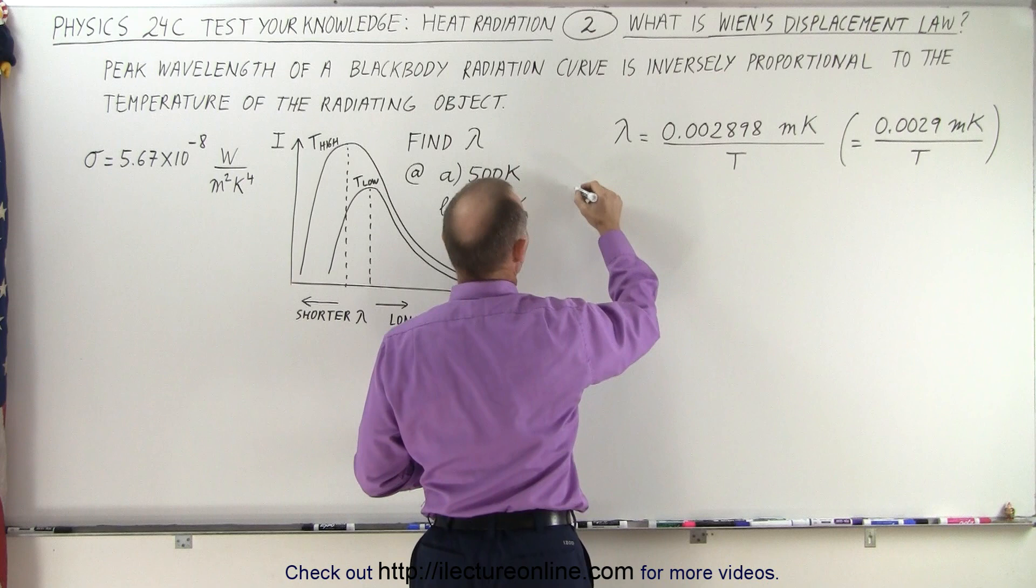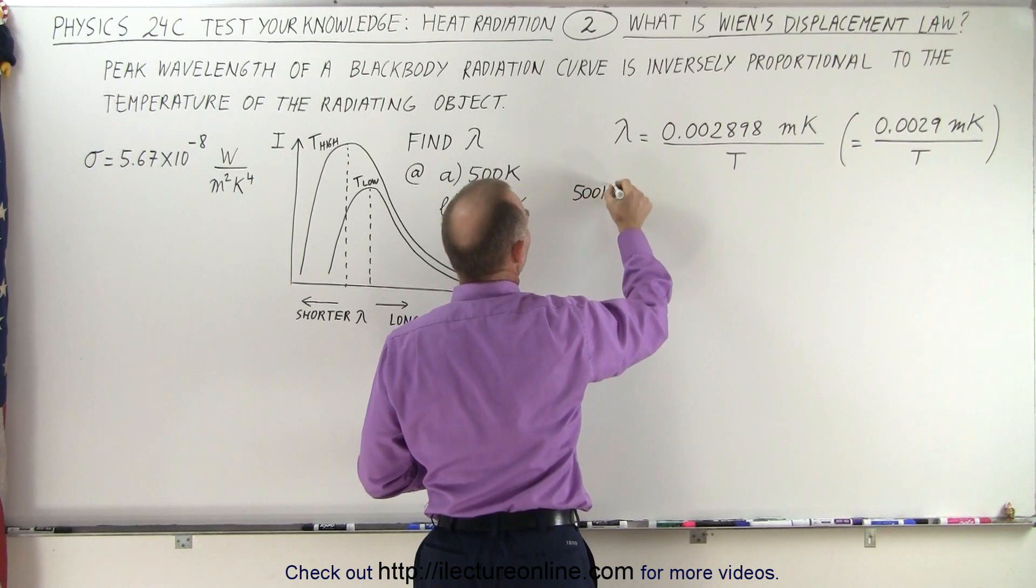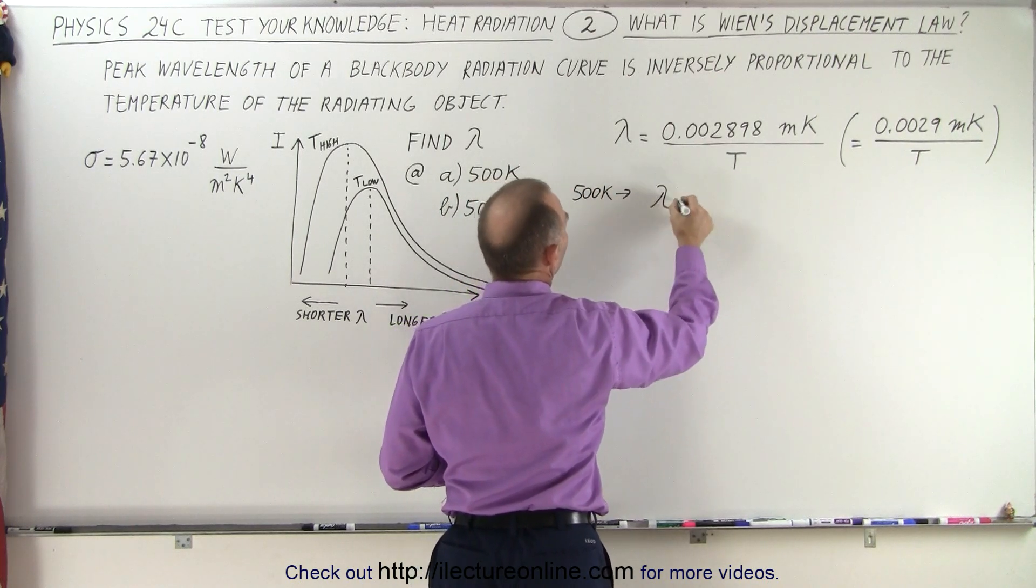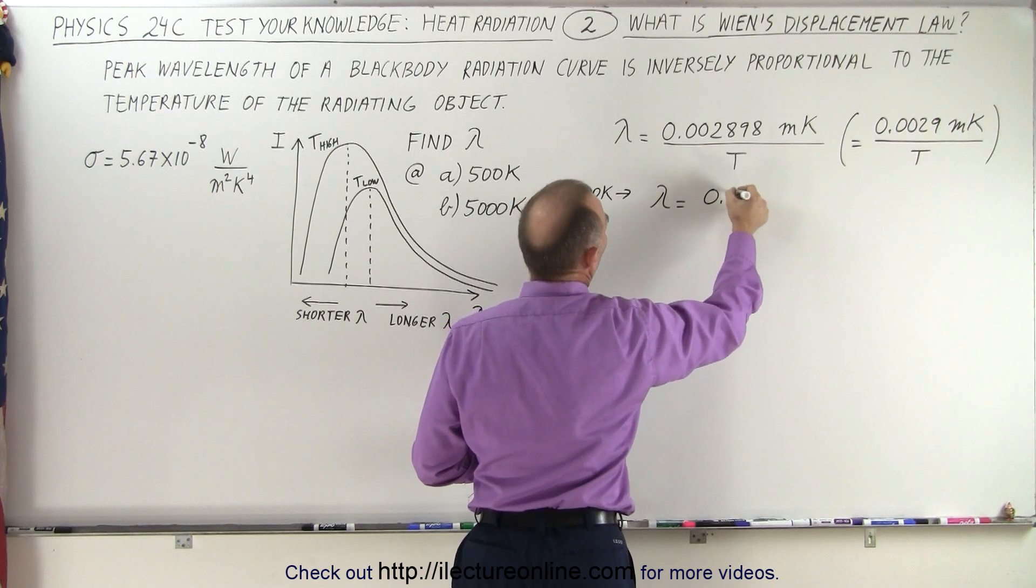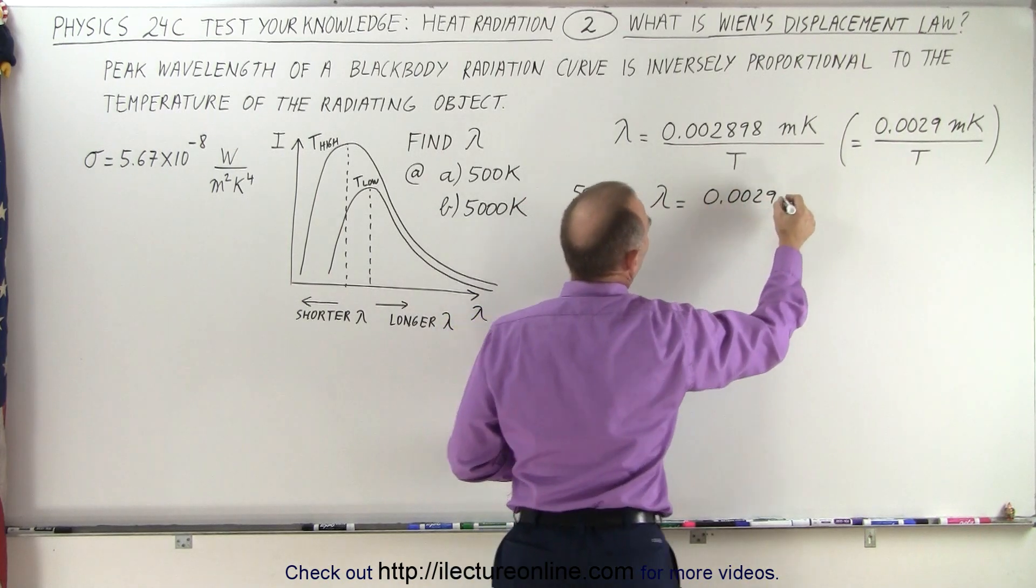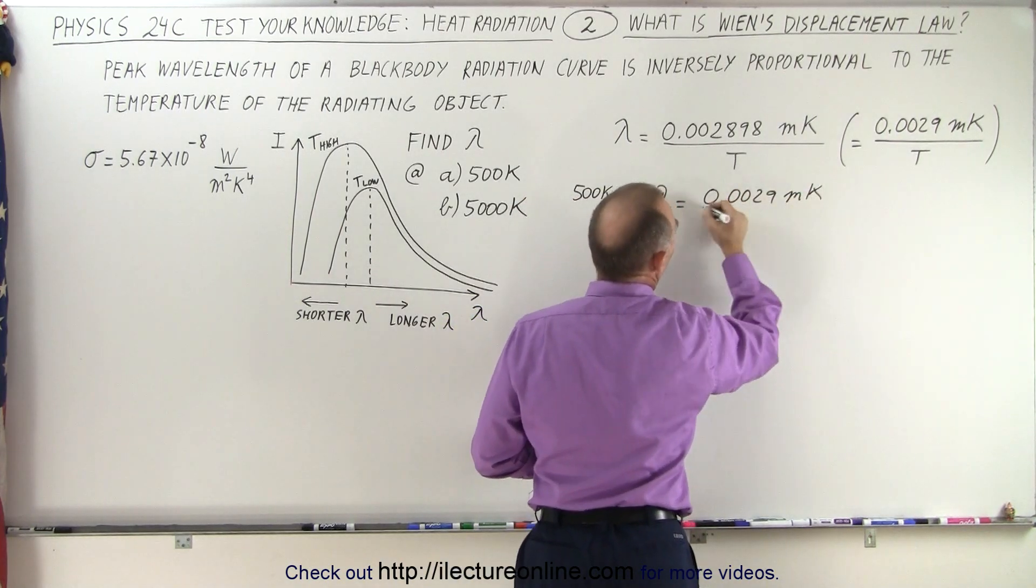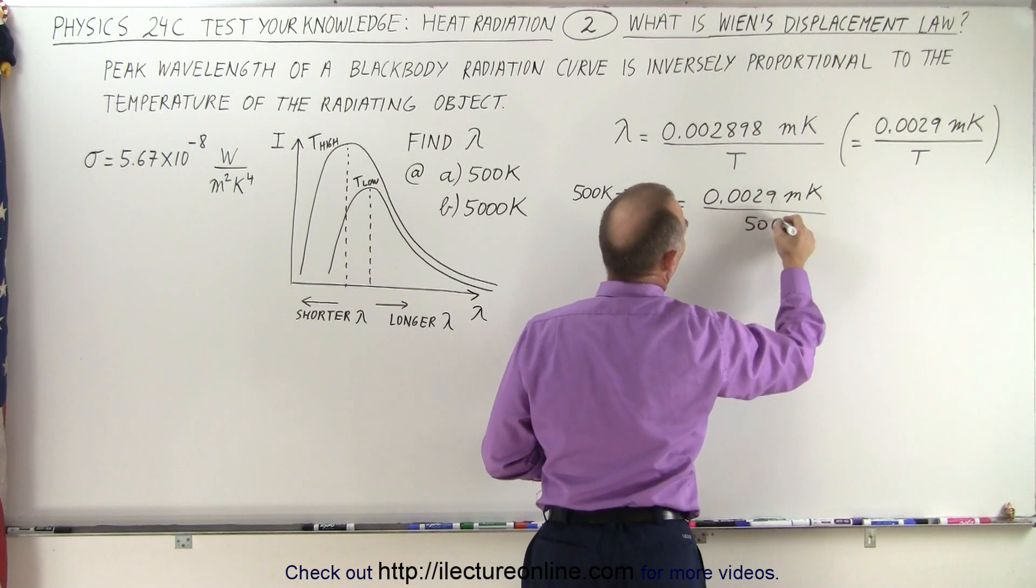So first let's do it for 500 Kelvin. For 500 Kelvin, we take the wavelength equal to 0.0029, that would be meter times Kelvin, divided by 500 Kelvin.